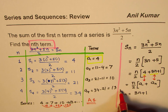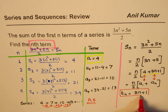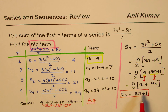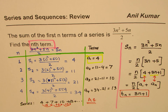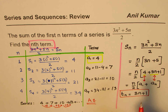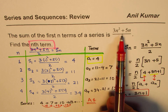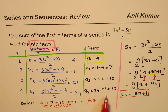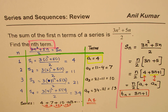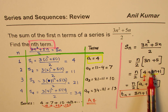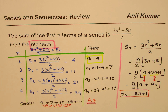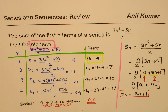So that is how we solve this question: rearrange the given sum and write it using the formula — n over 2 times the average of first and last term — to identify the nth term. In summary, we proved this is an arithmetic series starting at 4 with common difference 3, rearranged the formula, and found the nth term is 3n plus 1. I'm Anil Kumar — thank you and all the best.